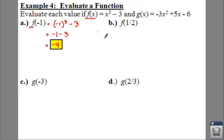Now, when we look at b, notice we have f of 1/2. That's pronounced 'f of.' So, we're going to put in our f(x) function, which means we're going to take 1/2 to the third, uh-oh, minus 3.